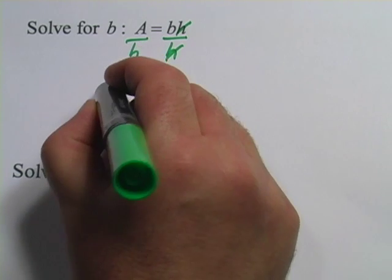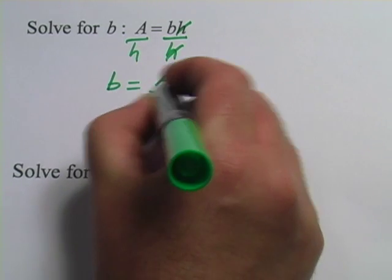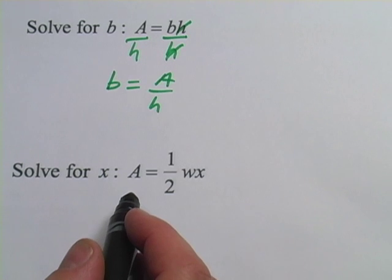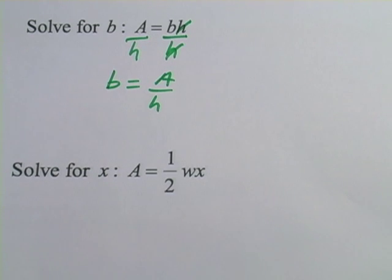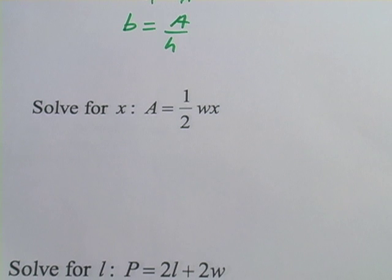You might want to rewrite that from left to right. B equals A over H might look nicer that way. Not too hard. Let's look at another one.